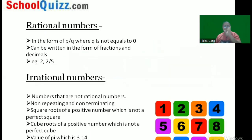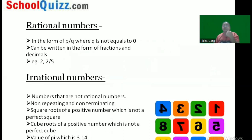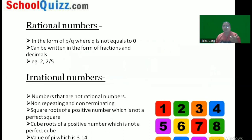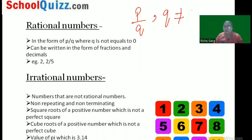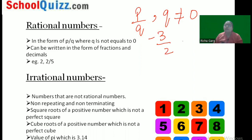We have two categories of real numbers: rational numbers and irrational numbers. Rational numbers are numbers which can be written in the form of p upon q, where q cannot be equal to zero — that is the only condition. We can write them as fractions, integers, any numbers. So minus three upon two is a rational number, two upon five is a rational number.